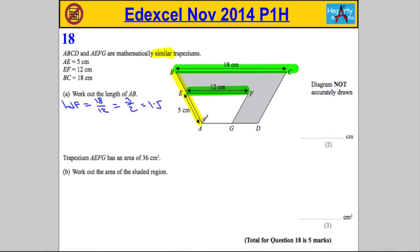Now, if I know that this side here, AE, is 5 centimeters, to get the large length AB, I need to do 5 times 1.5. And 5 times 1.5 is going to be 7.5. Now, that's part A in the bag.